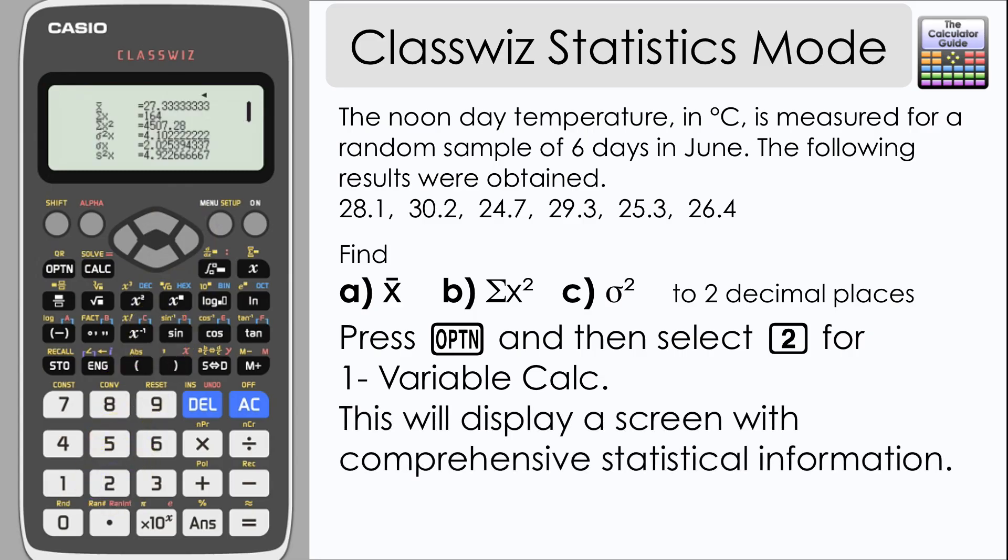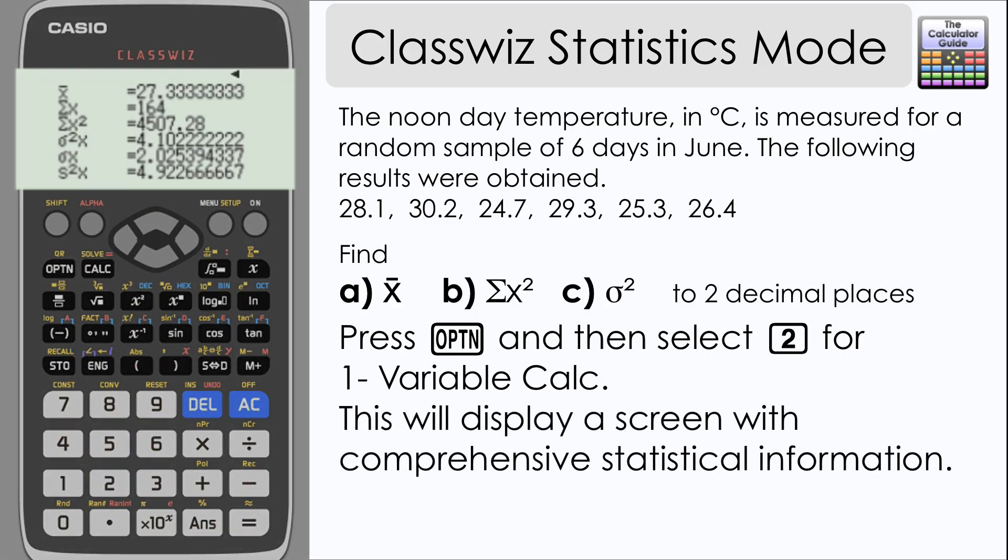And here we have a screen with quite comprehensive statistical information about the data that we inputted. You can see at the top there we have our mean, 27.33 to two decimal places. We have the sum of x and the sum of x-squared, which we needed as part of our answer.